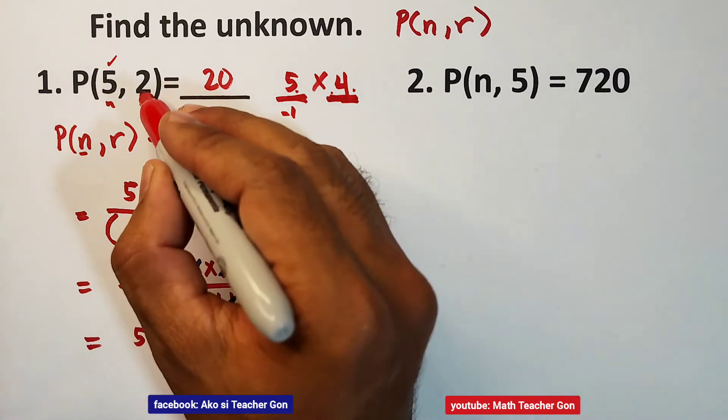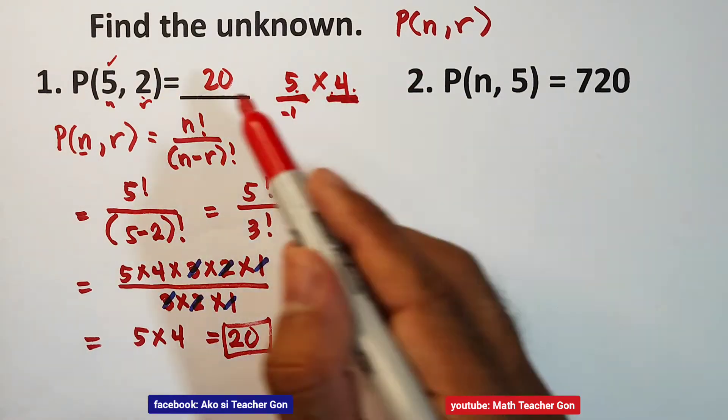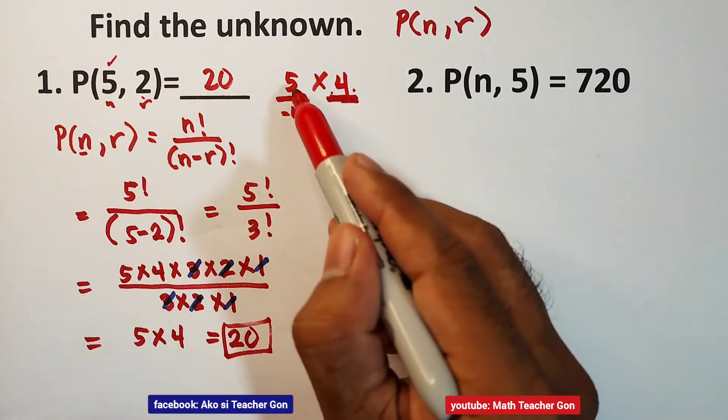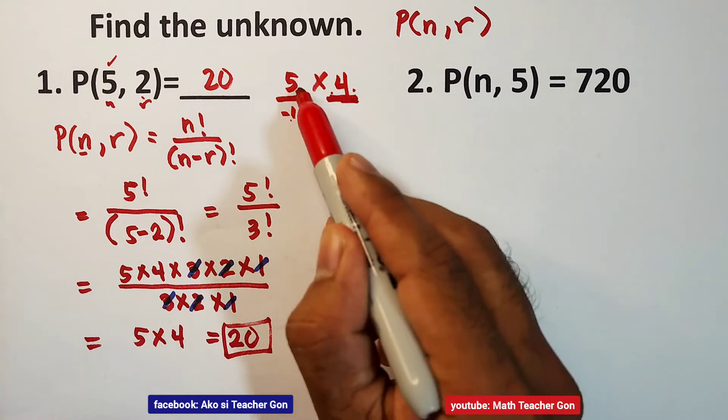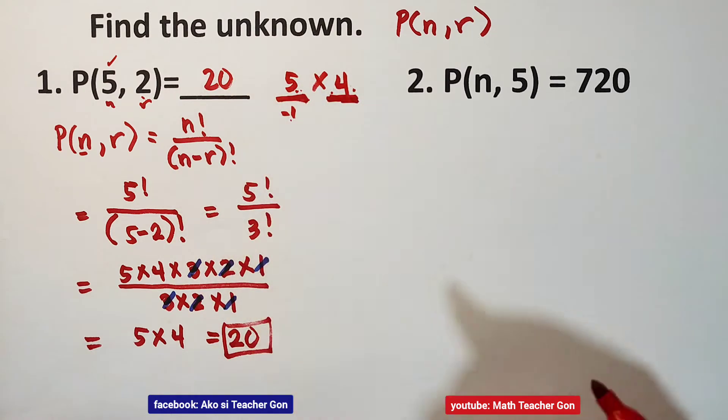To confirm: r is 2, so we count 2 numbers starting from 5. That is 5, then minus 1 gives 4. So 5 times 4 equals 20.